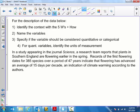Last slide we're going to look at. For the description of the data below, we want to identify the context with the five W's and how, name the variables, specify if the variables should be considered quantitative or categorical, and if they're quantitative, identify the units of measurement. In a study appearing in the journal Science, a research team reports that plants in southern England are flowering earlier in the spring. Records of the first flowering dates for 385 species over a period of 47 years indicate that flowering has advanced an average of 15 days per decade, an indication of climate warming according to the authors.